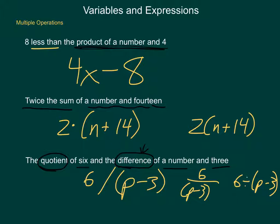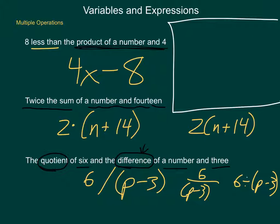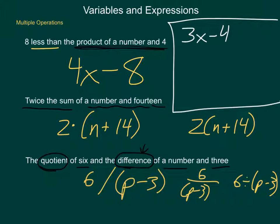Now, with variable expressions, we've been going from English into math, but you should be able to go both directions. What if I have 3x minus 4? How could this be expressed verbally? We have multiplication, so we can say 'the product of 3 and x, less 4.' We could say '3 times a quantity minus 4.' We could say '4 less than the product of 3 and a number.' There are many ways of structuring these representations. We use variables and expressions to give meaning and structure to the world around us.